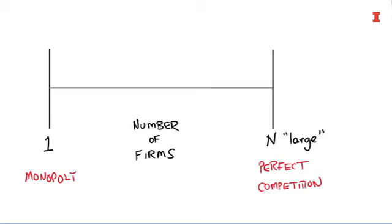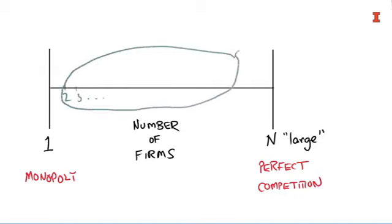And now in this module, we're going to venture into the middle land. This middle land sort of starts with two, three, and so on. This situation is where there's more than one firm. We don't really know how many it takes to actually get to the point where you collapse back into competition. But there's this gray zone which we're calling oligopoly. Oligopoly is Greek for competition amongst a few.